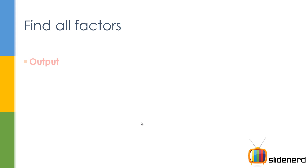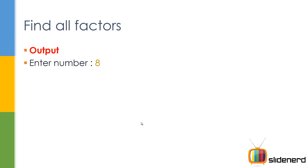Let's see how the output looks. We ask the user to enter a number; the user says 8. We're going to tell the user: 1 is a factor, 2, 4, and 8. So if you have a big number, this list is going to be massive. So how are we going to do this — that's the first question.